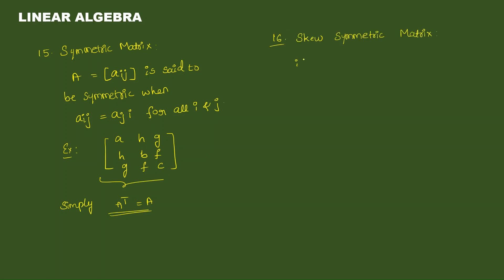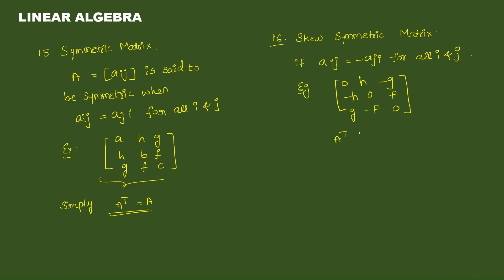Next — skew symmetric matrix. If aij equals minus aji for all i and j, all the leading diagonal elements are 0, then the matrix is called skew symmetric. A transpose equals minus A for a skew symmetric matrix. When you transpose such a matrix, you get the negative of the original matrix, and the diagonal elements are 0. So friends, this covers all special types of matrices. Next video will cover multiplication, addition, properties, trace, determinants, etc. Doubts irindha comment pannanga.